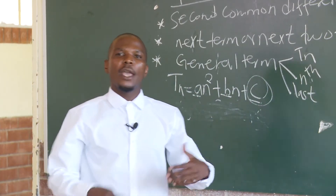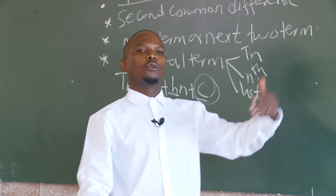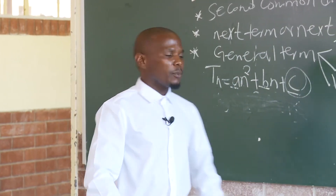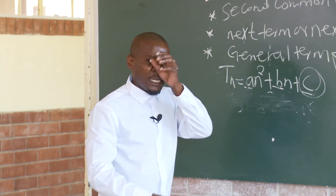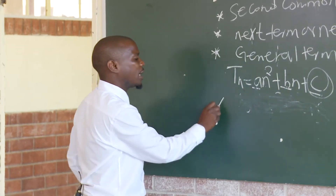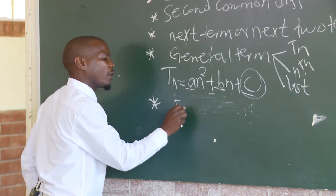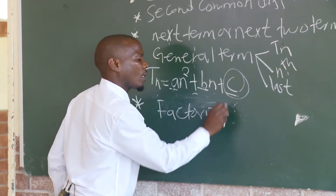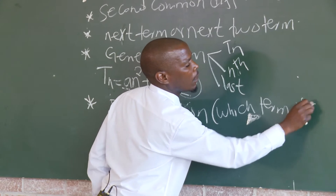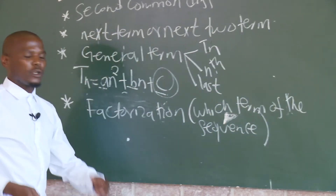Remember, in this case, 'a' is not the first term. If you have an arithmetic sequence, T1 is equal to a. We call it geometric: T1 is equal to a. But for a quadratic sequence, T1 is not equal to a. If you want to use a quadratic, you can use factorization to find which term of the sequence.